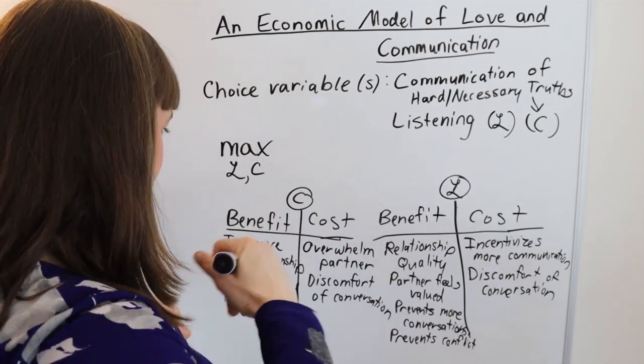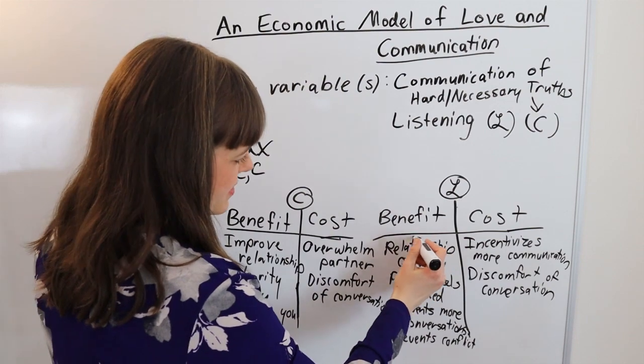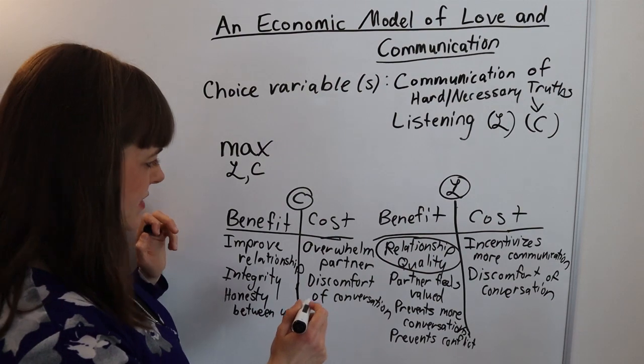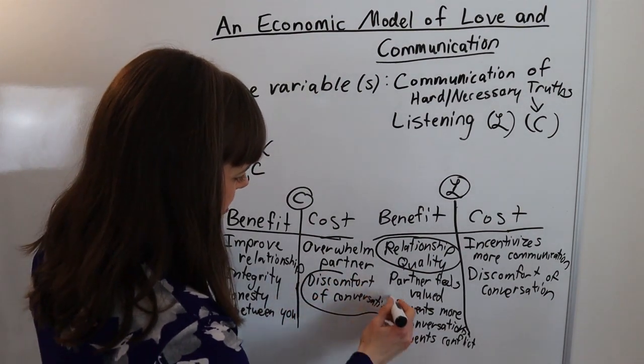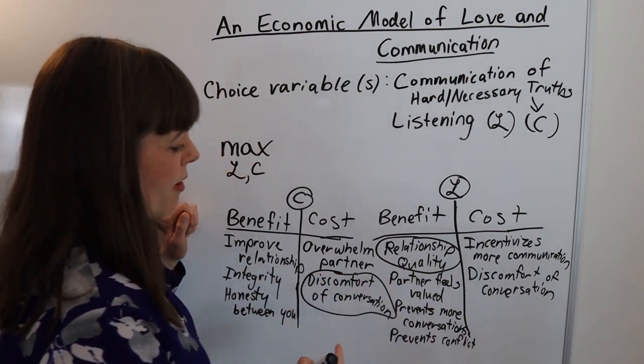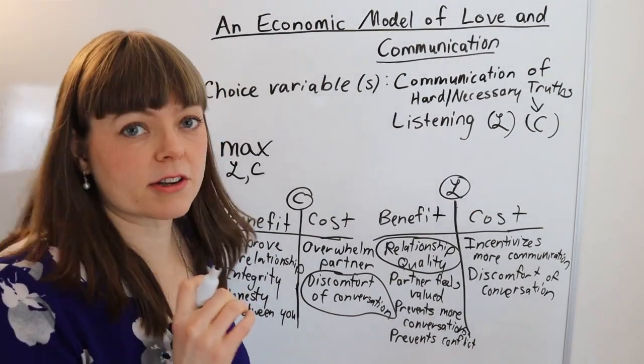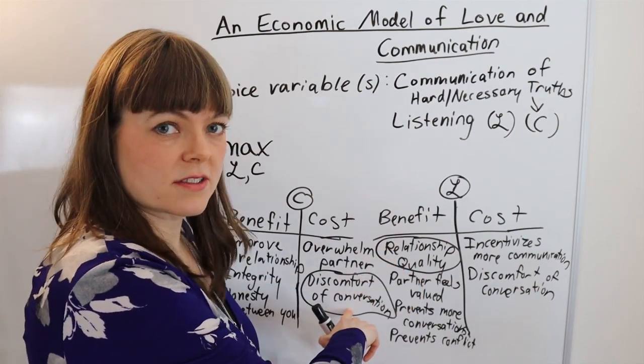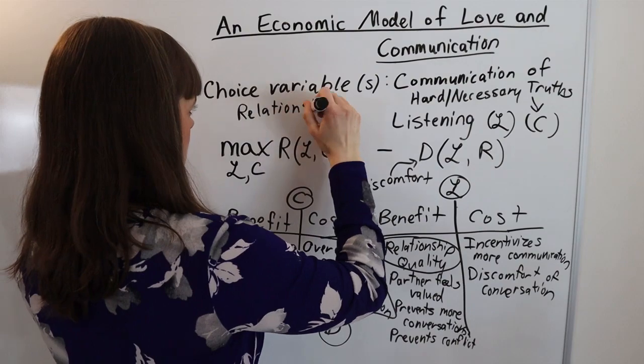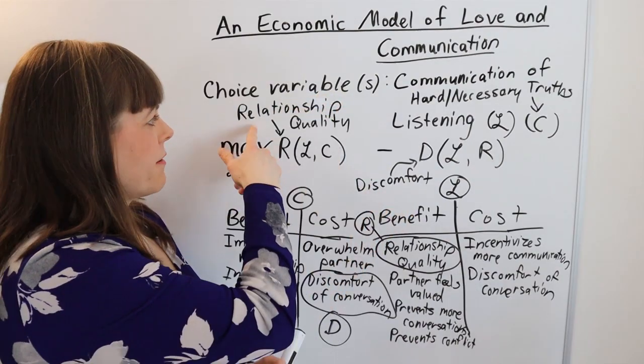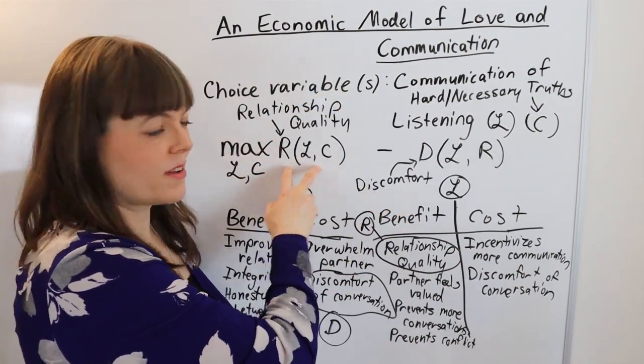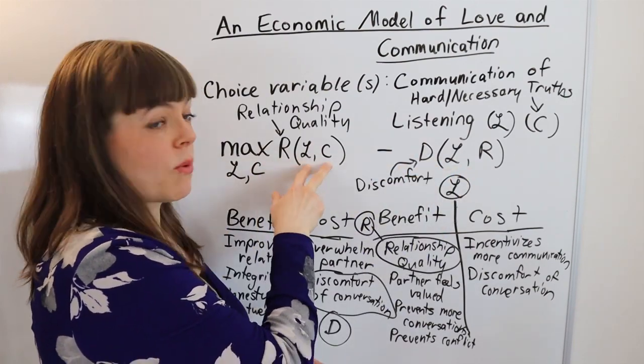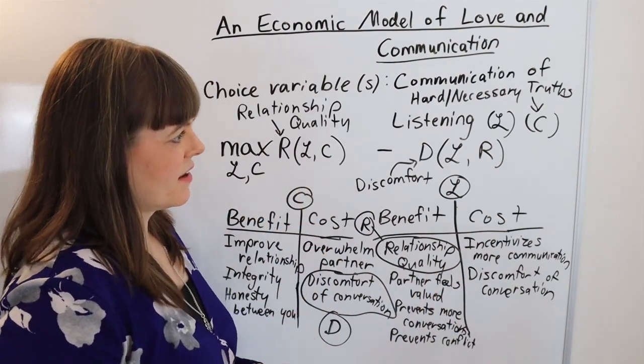Okay. So next step I get to pick my favorite costs and benefits. So relationship quality, well, that's the same over here. So I'm just going to pick it once. Discomfort of the conversation is also the same in these two models. So I could actually probably build this model very simply with just the one benefit and just the one cost. So now we've actually built a full model where you're maximizing relationship quality minus discomfort, where both of those things are a function of how well you communicate and how well you listen.